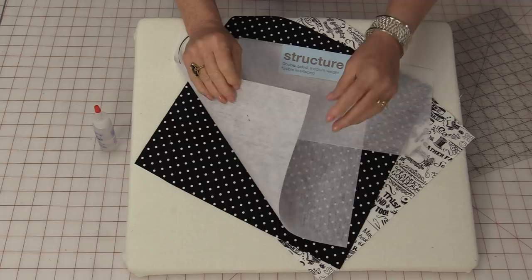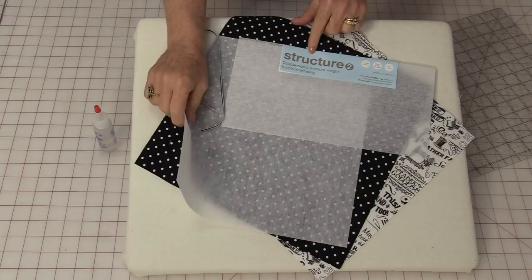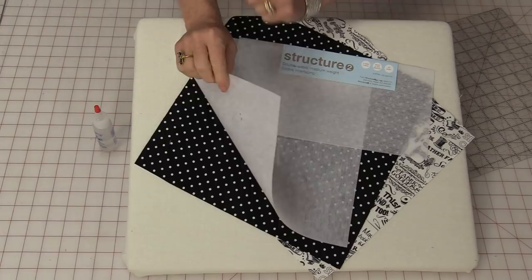To make this envelope I'm going to use a double-sided interfacing. This is a medium weight, almost like a paper itself. The one I'm using is called Structure and it's from Fairfield, and it's fusible on both sides.